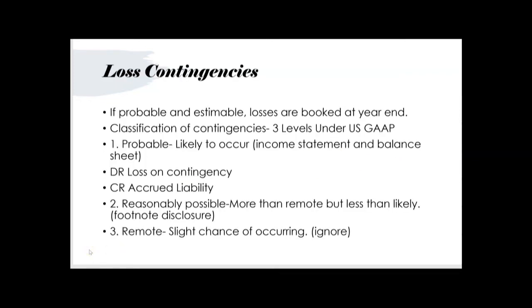Let's start with loss contingencies. Under US GAAP, if losses are probable and estimable, they're booked at year-end — debit to loss on the contingency, credit accrued liability. This journal entry hits both the income statement and the balance sheet: the loss is an expense on the income statement, and the accrued liability appears under current liabilities on the balance sheet.